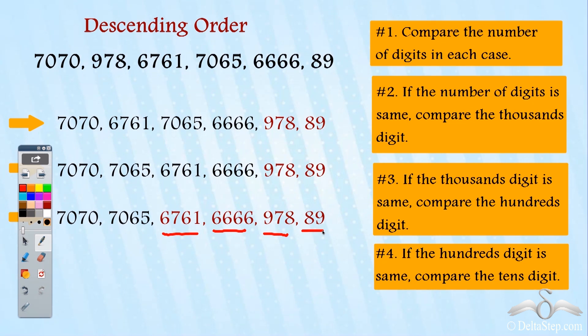I go to rule four which says if the hundreds digit is same, compare the tens digit. The hundreds digit is same. I need to compare the tens digit: seven and six. Seven is greater than six. So 7070 is greater than 7065, so this will come before this.